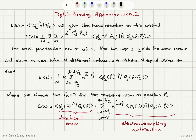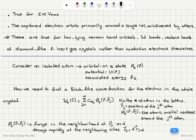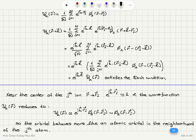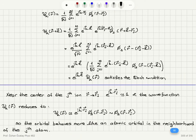Now that we have determined the wave function of our choice for the tight-binding approximation, we will calculate the expectation value of the energy by taking the inner product of the wave function with the Hamiltonian from both sides. This will give the band structure of the orbital. Our wave function was 1 over square root N: a sum over j from 1 to N of e to the ik·rj times phi_s(r - rj) for the j-th ion.